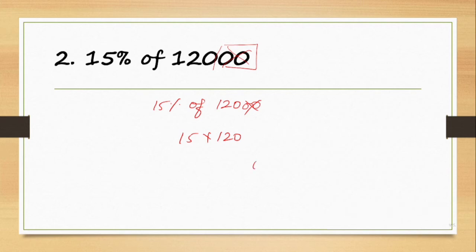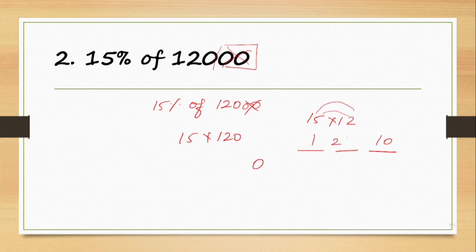Now let's look at 12 into 15 with 2 digits. You fill 3 gaps: 5 2's are 10, 1 1 is 1, 1 2 is 2, then 5 minus 5 is 0. Carry the 1, giving 5 7 8 — so 180 is the answer.